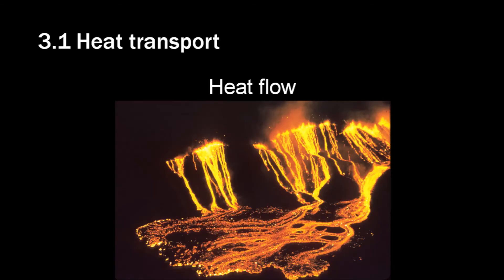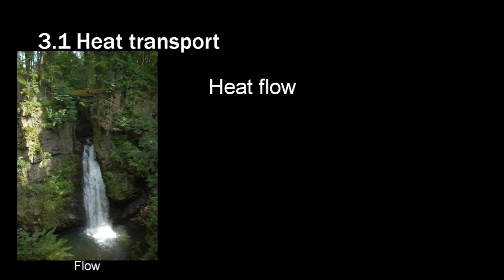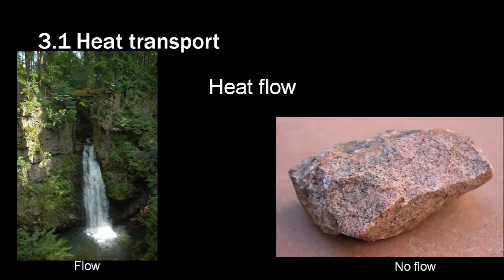So heat transport then, how do we get the impact heat from here to there? Basically, there are only three ways to do that. Heat flow, conduction and thermal radiation. If none of these is available, the heat stays where it is. Flow is like this, you have a liquid or a gas that is hot and the material moves. So this is flow and this is no flow.